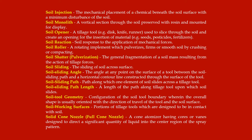Soil tool geometry: configuration of the soil-tool boundary wherein the overall shape is usually oriented with the direction of travel of the tool in the soil surface. Soil working surfaces: portions of tillage tools which are designed to be in contact with soil. Solid cone nozzle or full cone nozzle: a cone atomizer having cores or vanes designed to direct a significant quantity of liquid into the center region of the spray pattern.